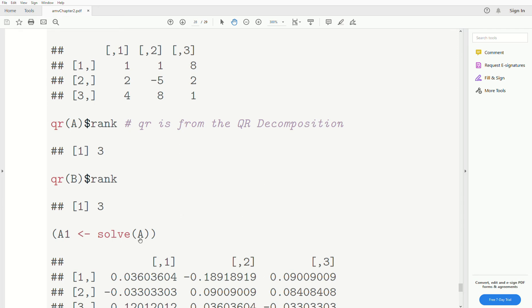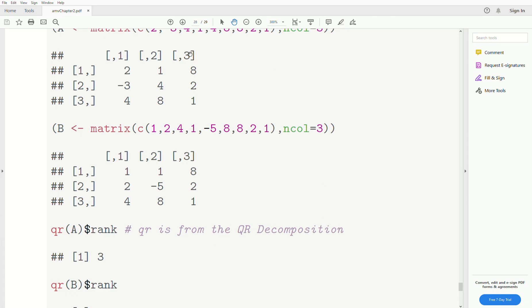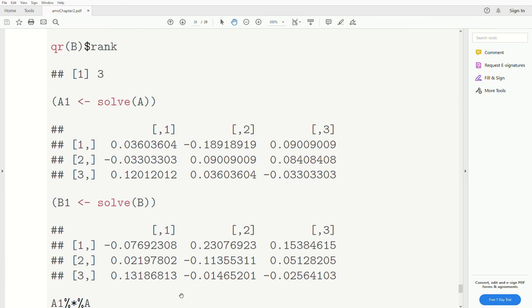Now to find the inverse of a matrix, we use the command solve. So solve A creates A inverse right here. And this is it. This is A inverse. This was A. This is A inverse. B inverse is this matrix.